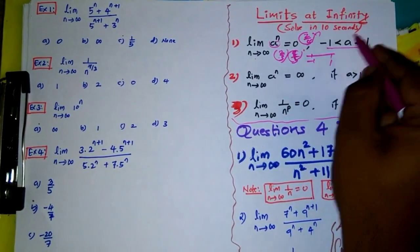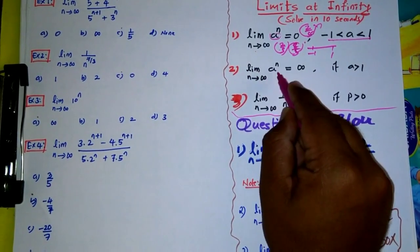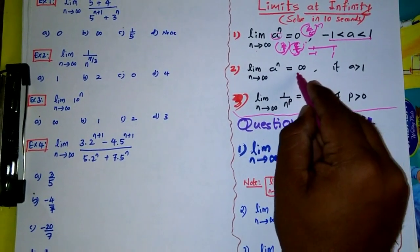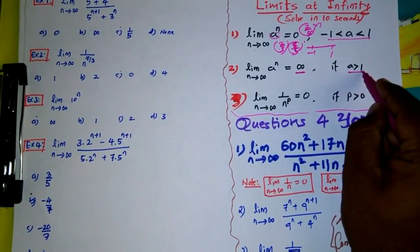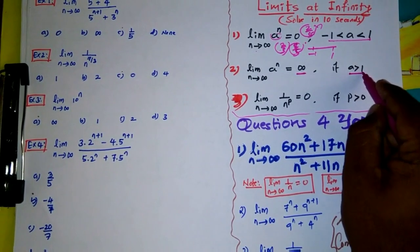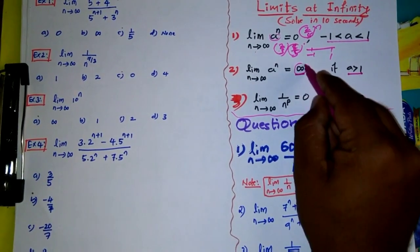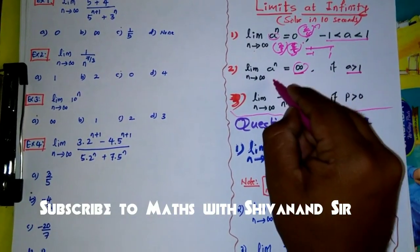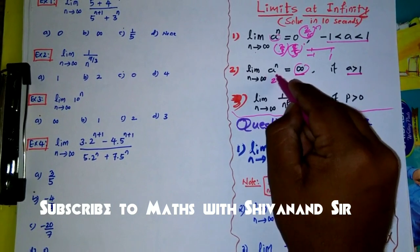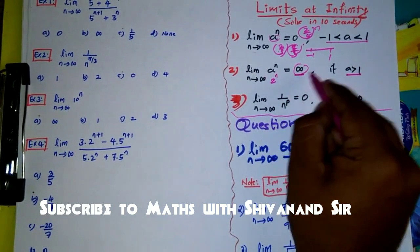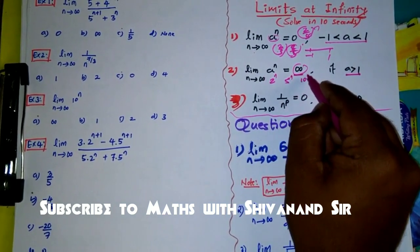Result number two: limit n tends to infinity of a raised to n equals infinity. If your a is greater than one, the answer is always infinity. For example, limit n tends to infinity of 2^n is infinity, 5^n is infinity, and 10^n is infinity.